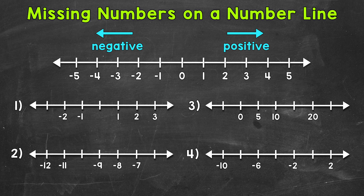Let's jump into our examples and see exactly how we find missing numbers on a number line, starting with number one. The first thing we want to do is take a look at what we are given, and determine how far apart the numbers are on the number line. You can think of it as seeing what we're counting by.